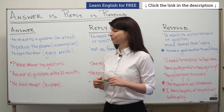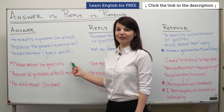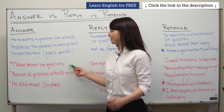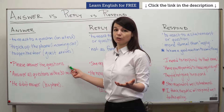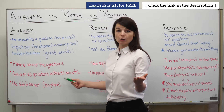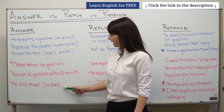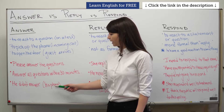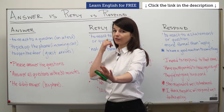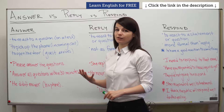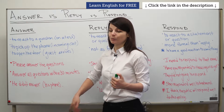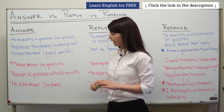Let's look at some examples. 'Please answer the questions' — we could use this for a test or in a discussion. For a test: 'Answer all questions within 30 minutes.' Here's a negative example: 'He didn't answer.' In this case, he didn't answer his phone. If you call someone and they don't pick up, you can say 'he didn't answer' — it's clear from context that it refers to his phone.